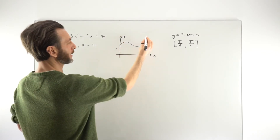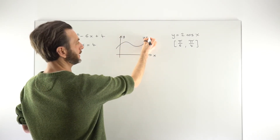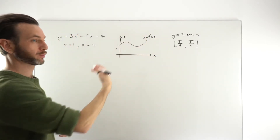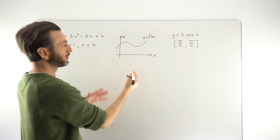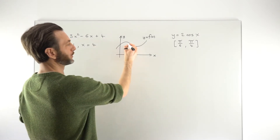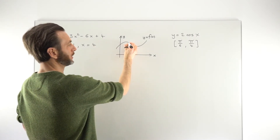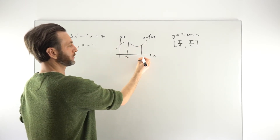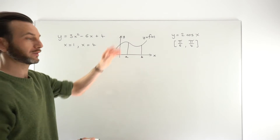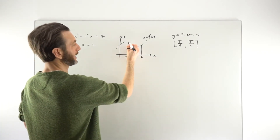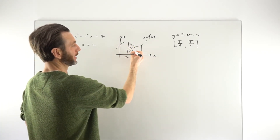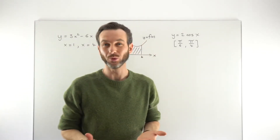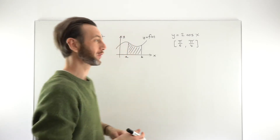What do we mean by the area under that curve? Well, let's just let this be f of x, so our function is f of x, so the curve is y equals f of x. We mean the area under the curve, but also between two limits — basically two vertical lines. And let's call these points A and B, where those vertical lines come from the x-axis. So, the area under the curve is actually the area under the curve between the x-axis and between the two limits.